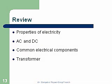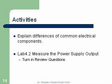Activities: explain the differences between the common electrical components — be able to identify them all and discuss the differences. In Lab 4.2, we're going to measure the power supply output. It goes in at 120V; coming out, we're going to find 12V plus or minus, 5V plus or minus, and 3.3V. Discuss what those are used for, and answer the review questions. That's it for Chapter 4, Part 2 — thank you very much.